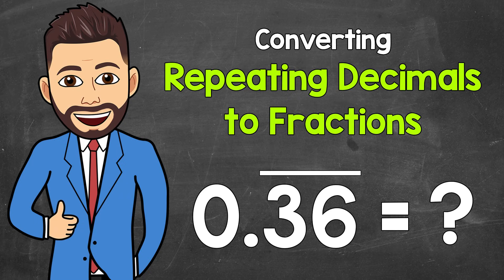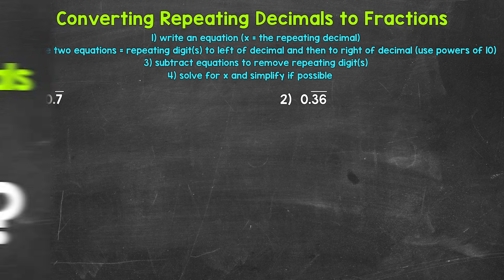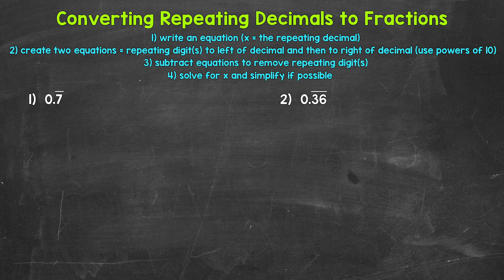Welcome to Math with Mr. J. In this video, I'm going to cover how to convert repeating decimals to fractions, and this is going to be part one. We will go through four examples, and in each of these examples, all digits to the right of the decimal repeat. In part two, we will cover examples where we have non-repeating digits mixed with repeating digits to the right of the decimal.